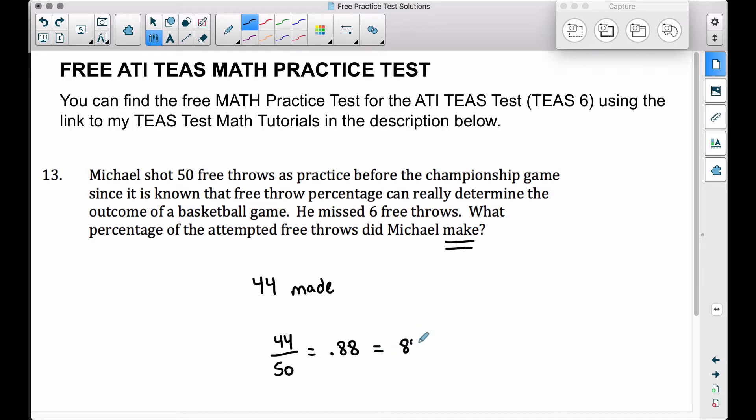0.88 equals 88%. He made 88% of his free throws because he missed six, subtract that from 50 total shots, that leaves us with 44 shots that he made. So if he made 44 out of 50, dividing that we get 0.88.